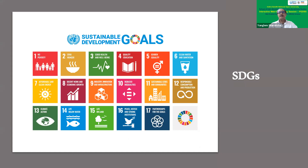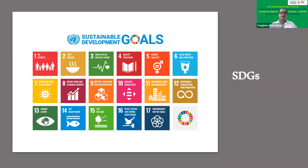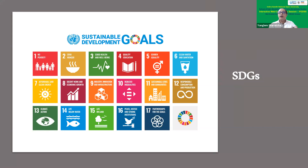Goal 1 is about no poverty — ending poverty in all its forms everywhere by 2030. The majority of people in sub-Saharan Africa, for example, live on less than $1.90 per day. If a person cannot achieve basic needs, how can we expect to end poverty, end hunger, give education, or have gender equity? Every individual needs to have responsibility at different levels to achieve this.